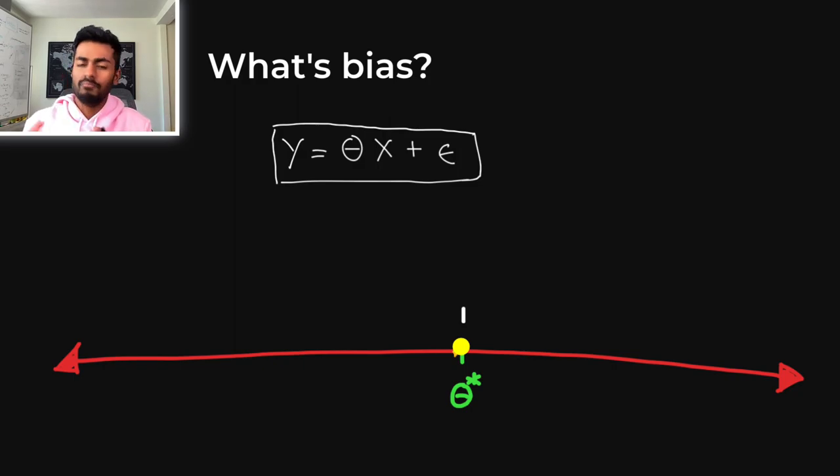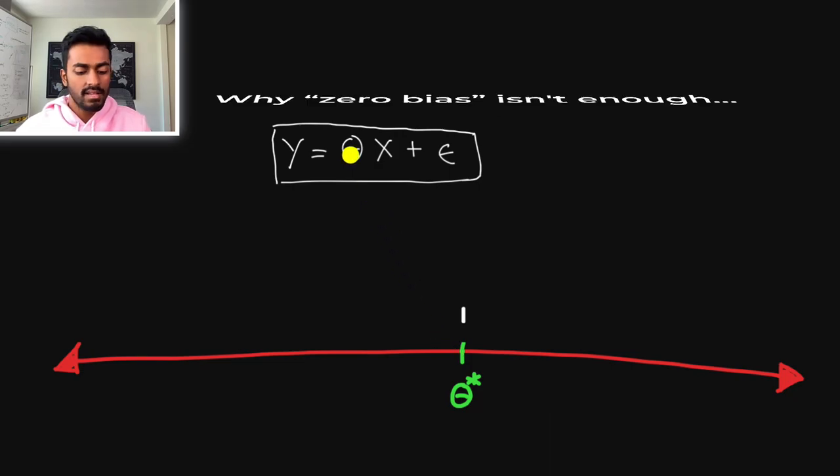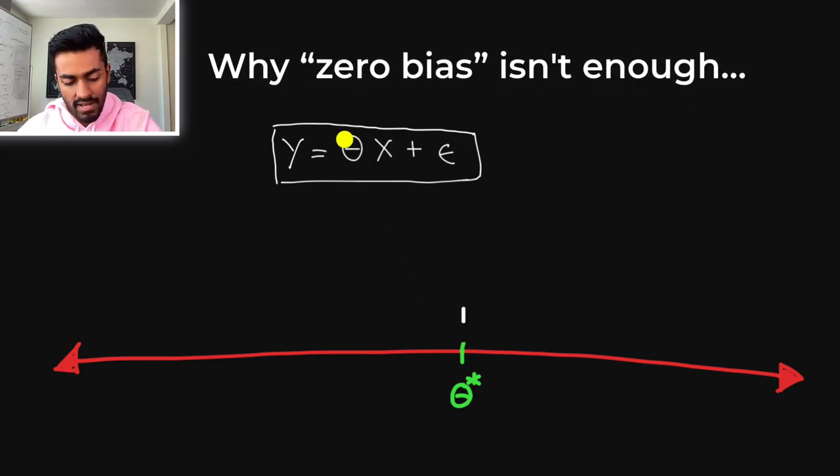So if bias quantifies the difference between the average value of the prediction, as well as the true value, then why do we need anything else? We can just minimize bias. Let's say that now we trained our model once and we got some theta value that's equal to 101.